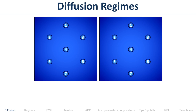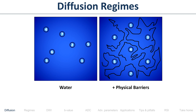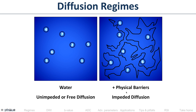Diffusion regimes: take two beakers of water with seven water molecules. In pure water, that's purely random, free motion. Now add physical barriers to the second beaker — the water molecules are vibrating around but not moving as much; they're not quite so random. After a certain time, they're in a random location within their spatial constraints. So one situation is free diffusion, and the other is impeded diffusion — diffusion that occurs in the presence of some physical barrier.